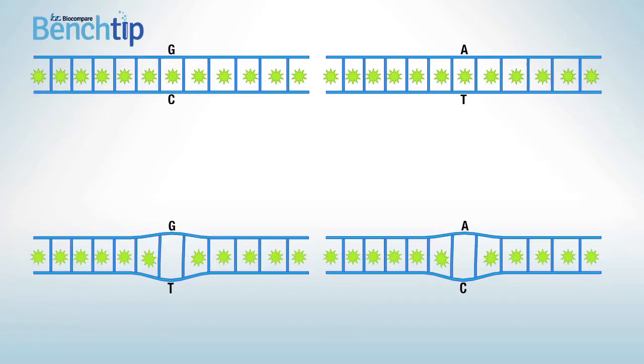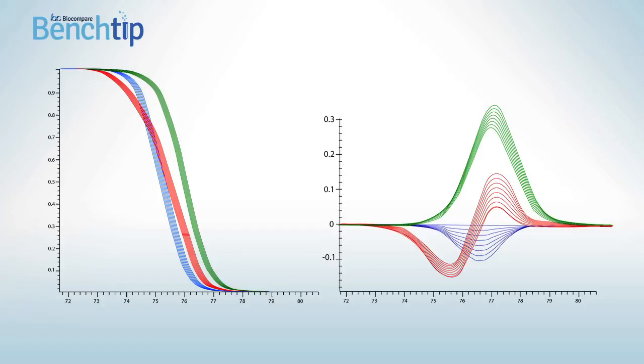The gradual re-melt of these amplicons reveals the differences in the base pairing of amplicons by changes in the shape of the melt profiles.